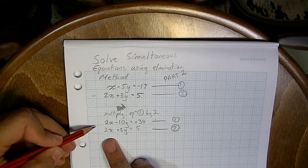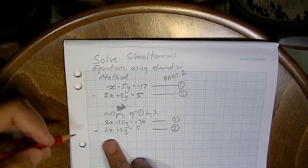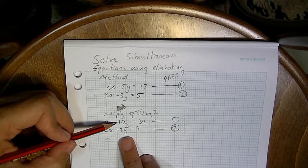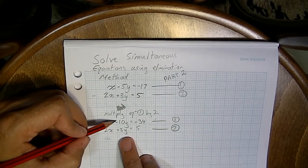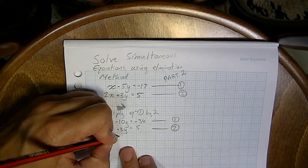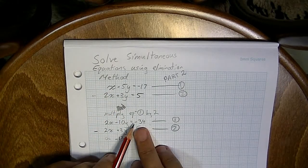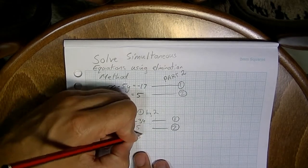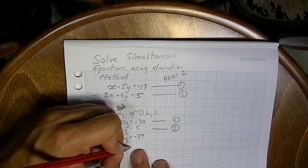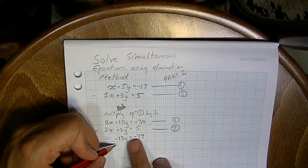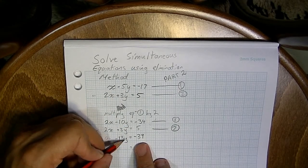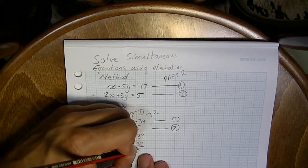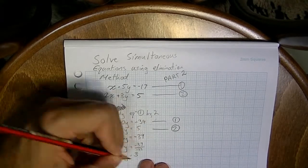Now I can go to work and subtract the equations from each other. 2x minus 2x is 0x — that gets rid of the x's. Negative 10y minus positive 3y is negative 10y minus 3y, which is negative 13y. And then negative 34 minus 5 gives me negative 39. So negative 13y equals negative 39. Dividing both sides by negative 13 gives y equals negative 39 over negative 13, which is y equals 3.